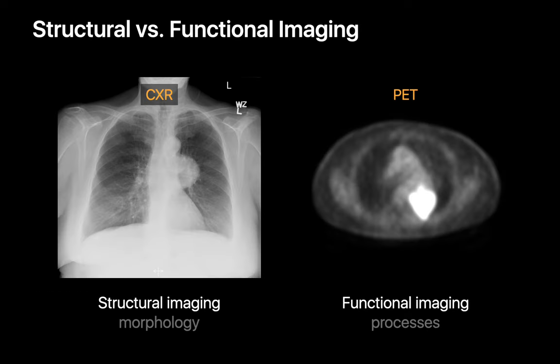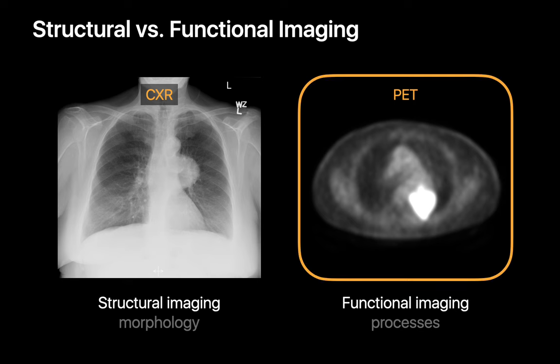Generally speaking, medical imaging studies can be divided into structural modalities versus functional modalities. Structural imaging modalities, like x-ray or CT, allow us to diagnose a problem when a disorder abnormally changes the morphology of something inside the body. Functional imaging modalities, on the other hand, allow us to diagnose a problem when a disorder abnormally alters the physiologic or metabolic processes inside the body.